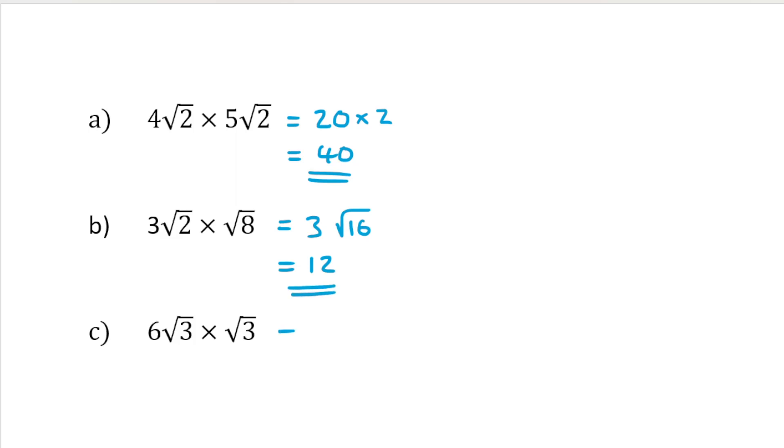Last example. We've got 6 root 3 times by root 3. Well, that will be 6 times by 3. And the reason for that is root 3 times root 3 is just 3. And 6 times by 3 is 18.